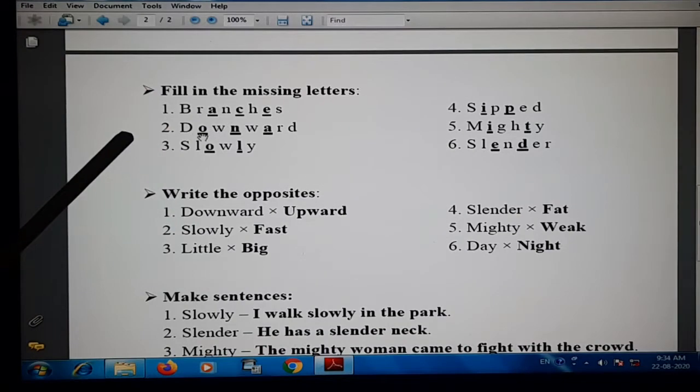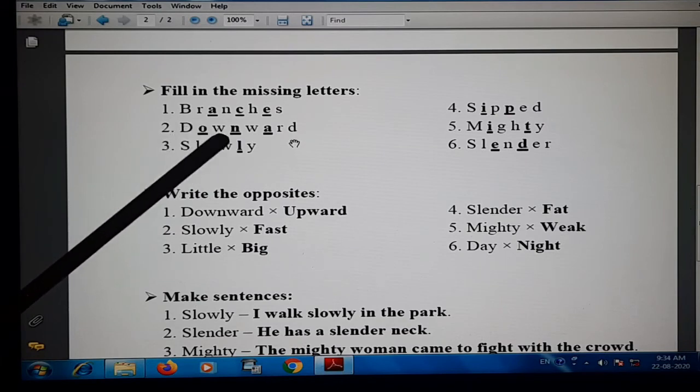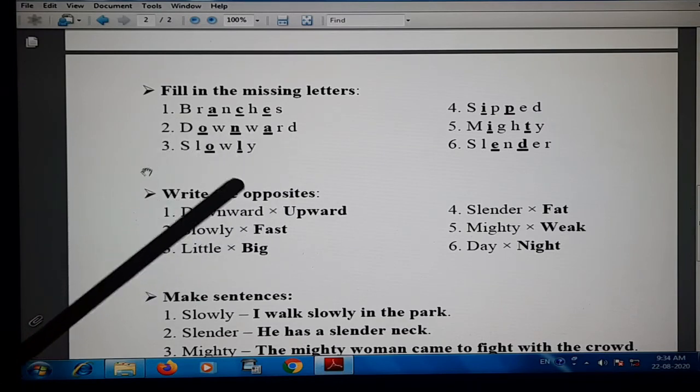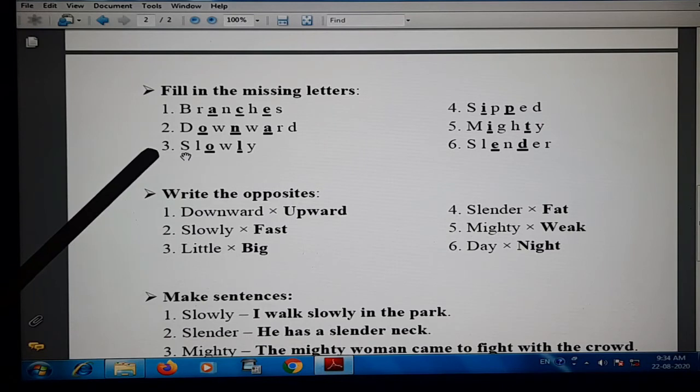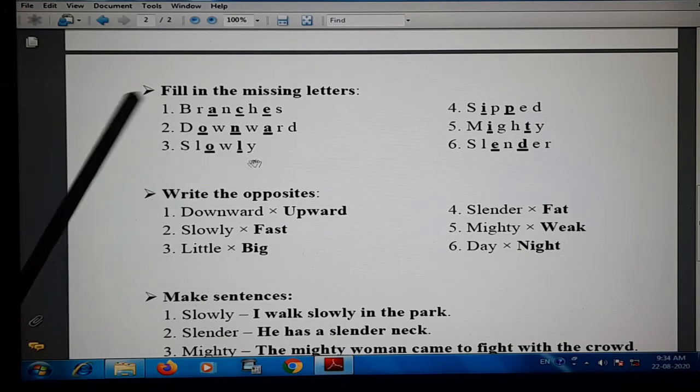Then number two, downward: D, O, W, N, W, A, R, D. Here the missing letters with dashes are O, N and A. Then number three, slowly: S, L, O, W, L, Y. The dashes are on O and L.